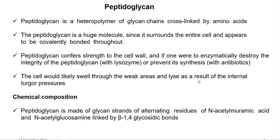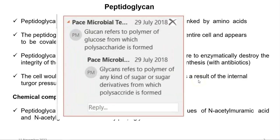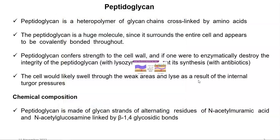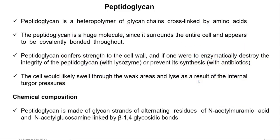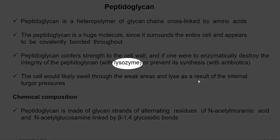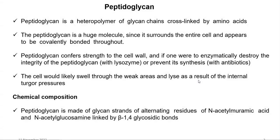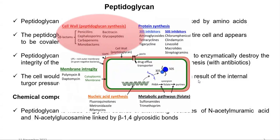Peptidoglycan is a heteropolymer of glycan chains that are cross-linked by amino acids, where glycan refers to carbon and its derived molecules. The peptidoglycan is a huge molecule surrounding the entire cell, appearing to be covalently bonded throughout. It confers strength to the cell. To destroy peptidoglycan, one needs to add an enzyme such as lysozyme, or the synthesis can be prevented using certain antibiotics.